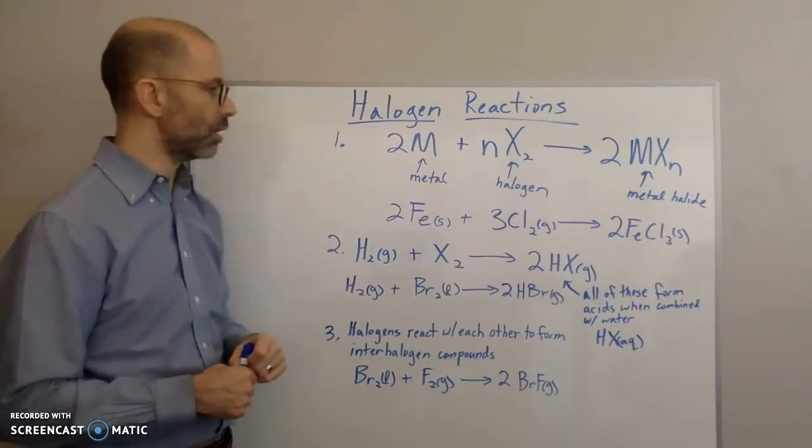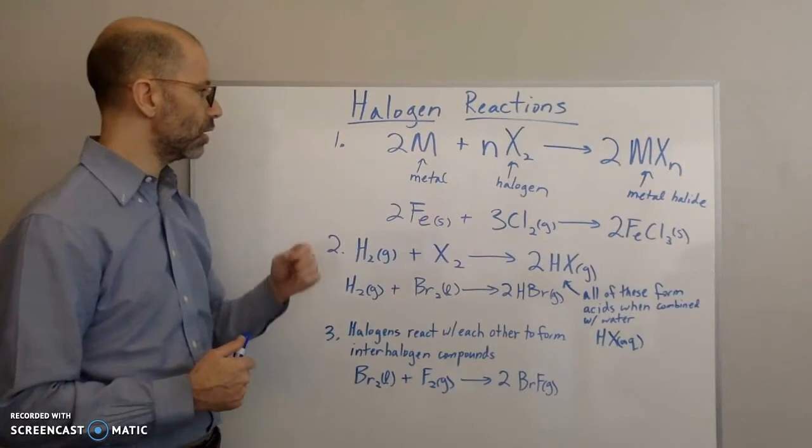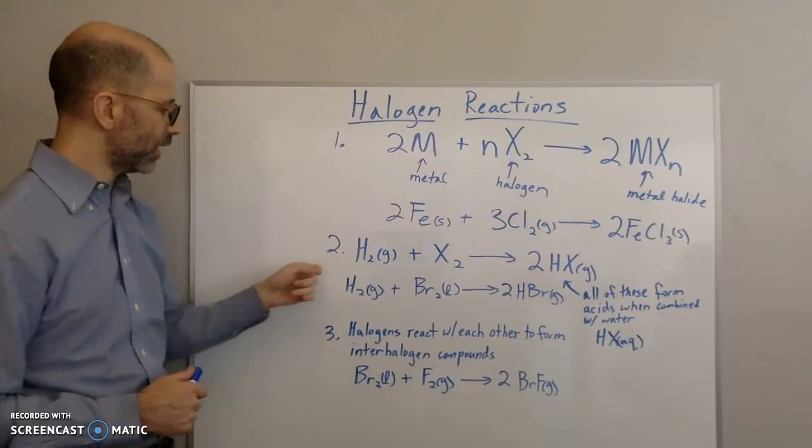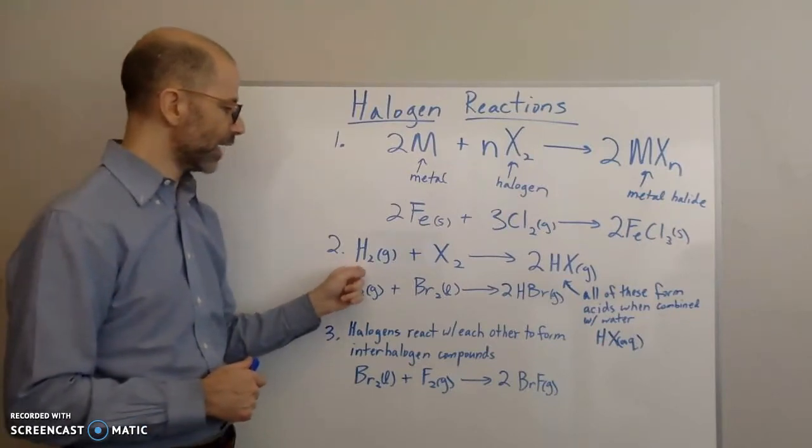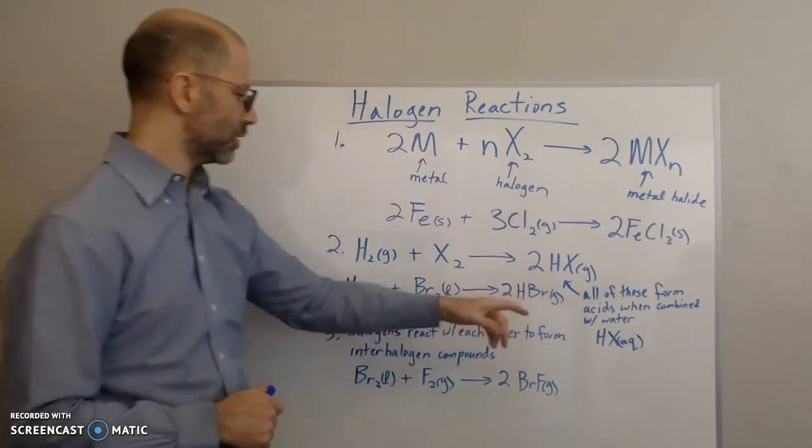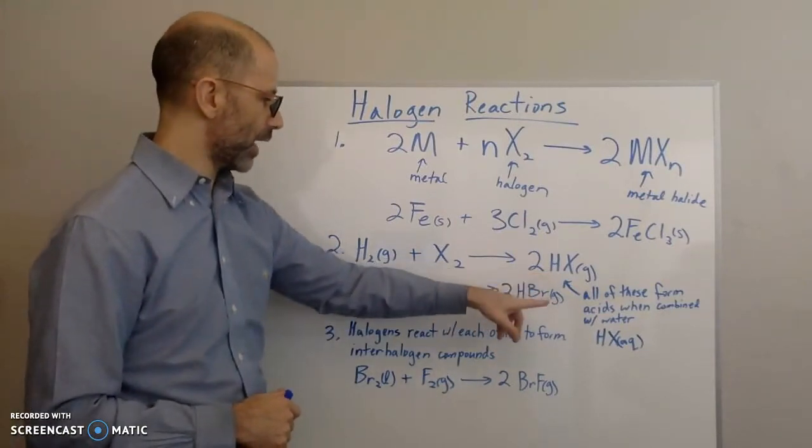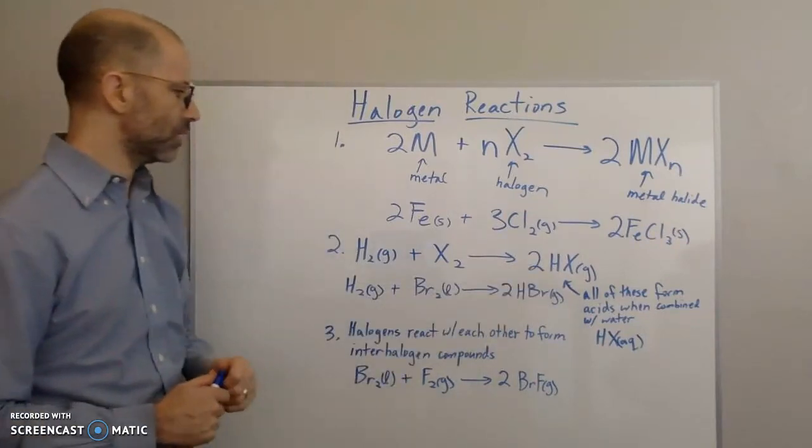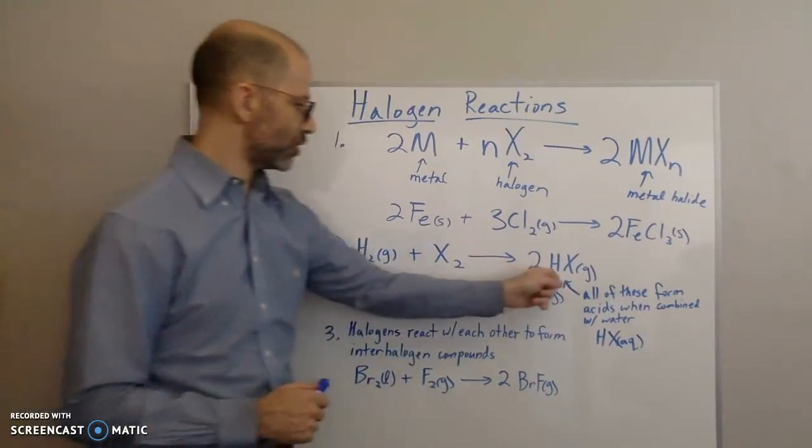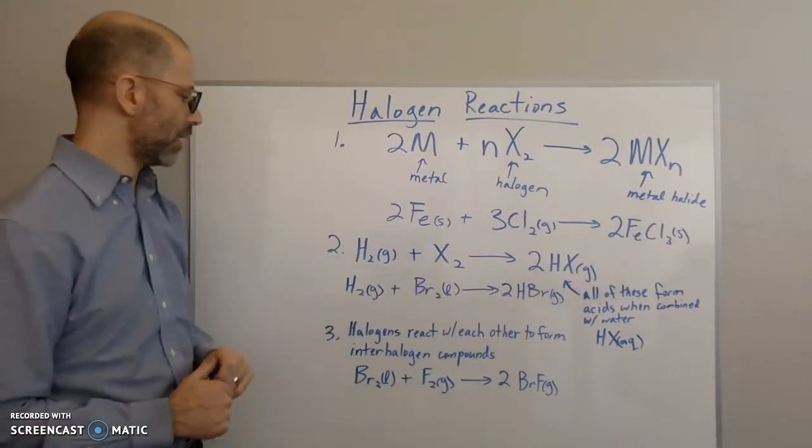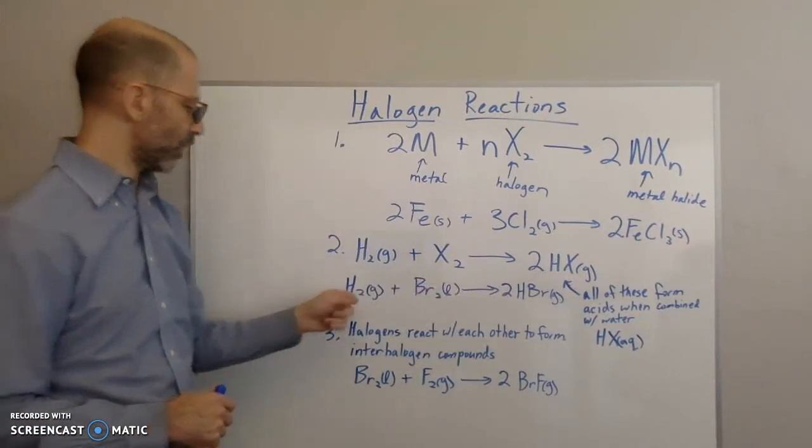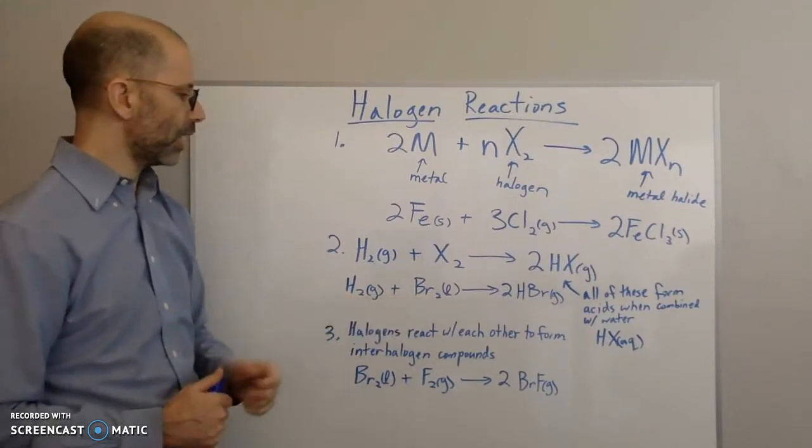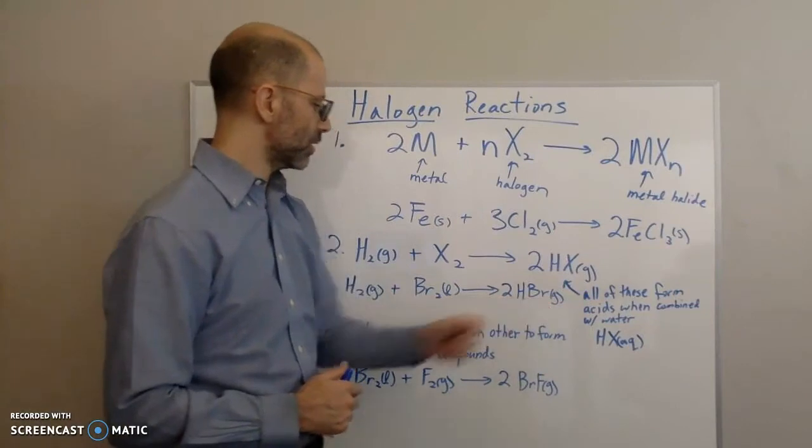The second reaction that halides can go through is that they can react with hydrogen gas to form this hydrogen halide compound, HX, where X represents the halide. Here's an example where you have hydrogen gas reacting with bromine liquid, forming HBr gas.